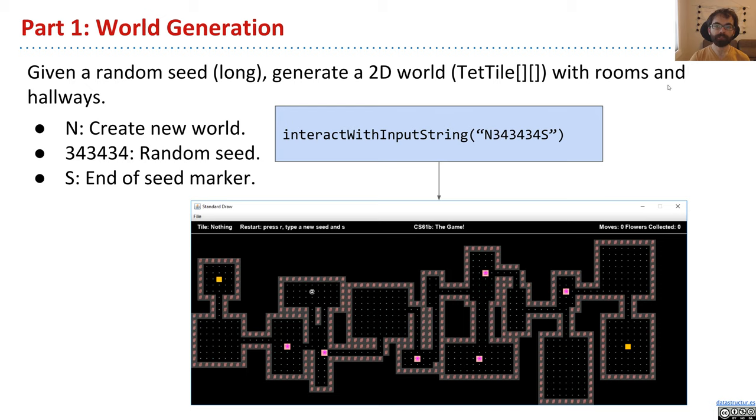So given a random seed that is a long, so it's just a larger version of an integer, you're going to generate a two-dimensional world of tile objects. And that world needs to have rooms and hallways. So here's an example drawn from arbitrary students from spring 2018. So if you provide to this method that you must support called interactWithInputString, the string N343434S, the N means create a new world. 343434 means the random seed used to generate this world. So this is seeding a pseudo random number generator. And then the S means this is the end of the seed, so it knows when to stop looking.